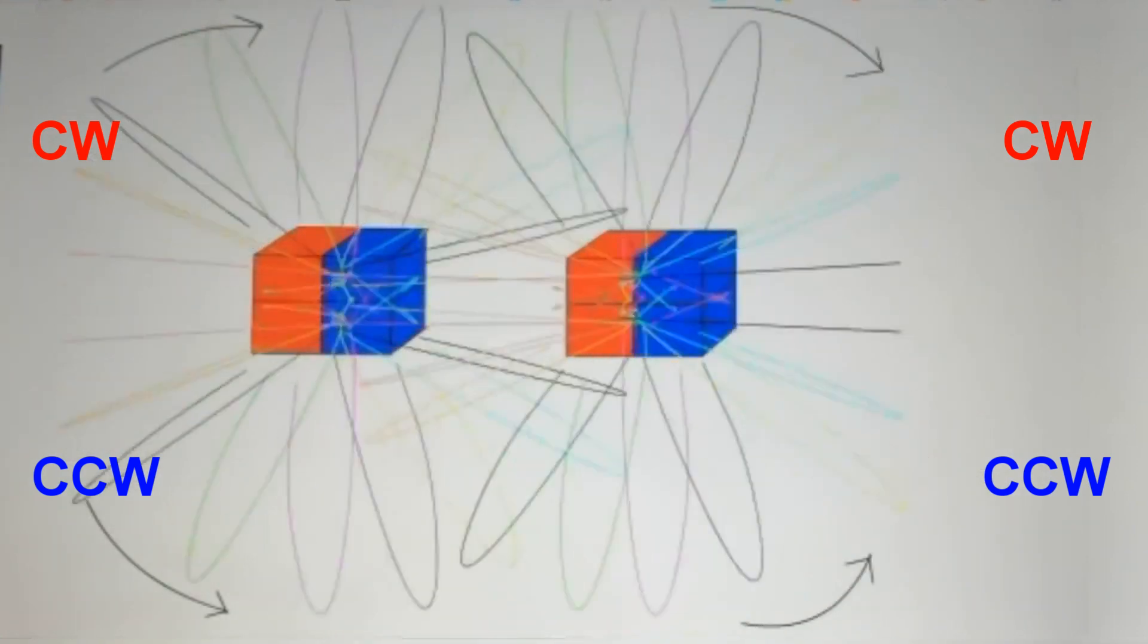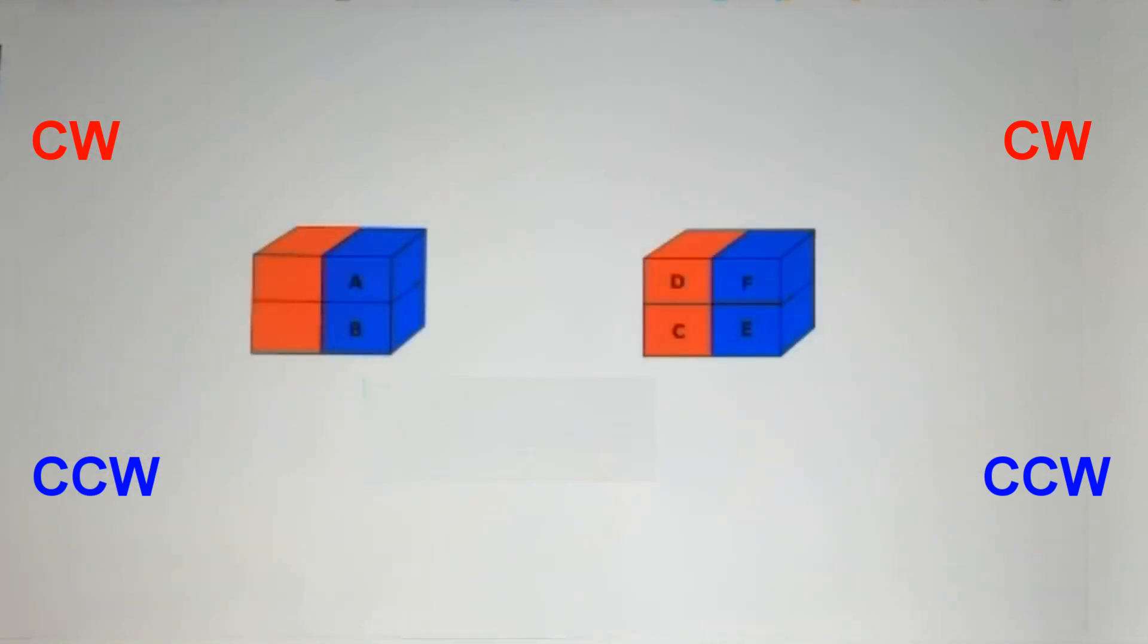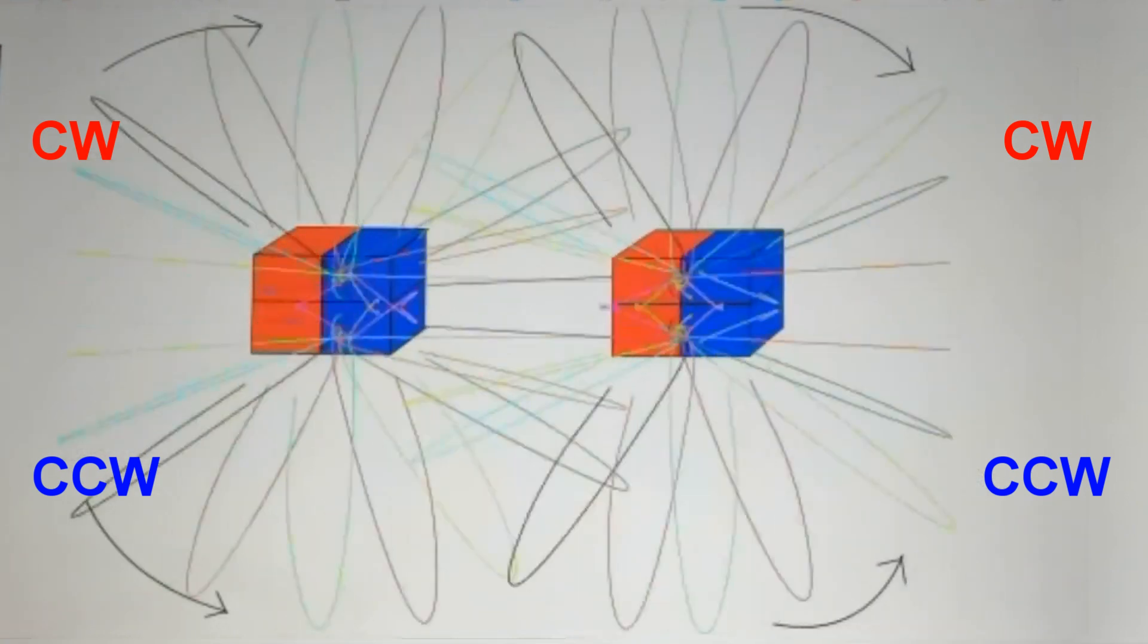The rope model of magnetism explains the invisible mechanism that underlies attraction and repulsion.